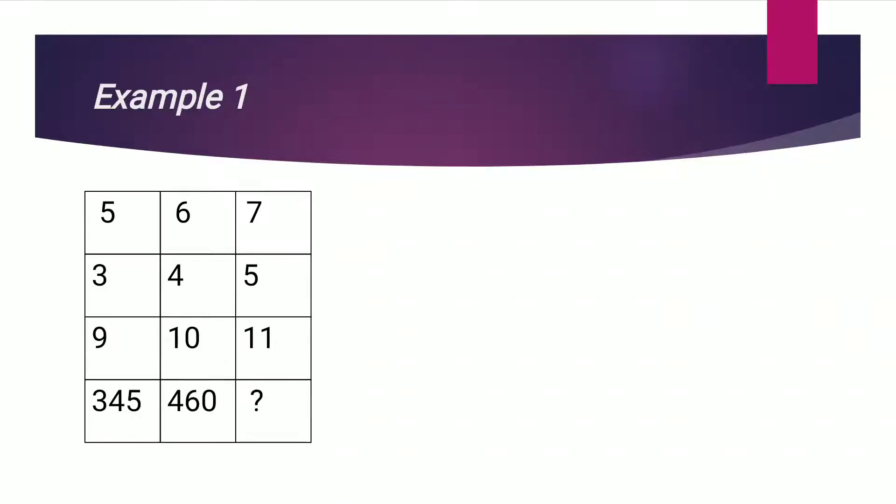So the logic following here is, first we will multiply the upper number by the lower number. That is, for the first column if you look, we will multiply 5 by 9. So 5 into 9 we get 45. Now the lower number given is 345, so we have to get 300. So the middle number is 3.